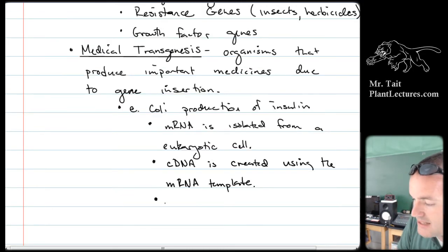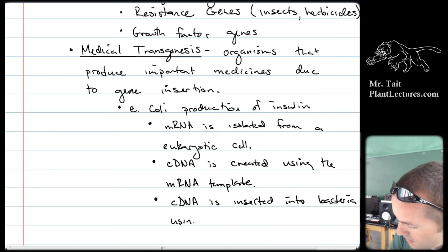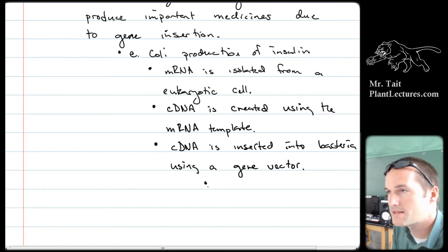Then you just insert that cDNA into the bacteria using some sort of a vector, some sort of transplant mechanism. cDNA is inserted into bacteria using a gene vector. Gene vector just means some method of inserting genes.